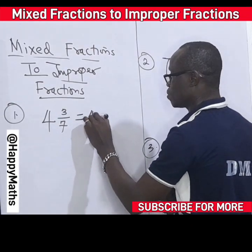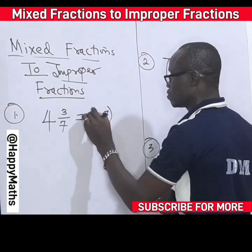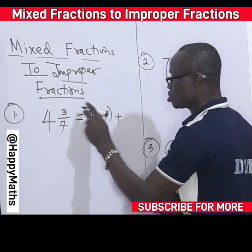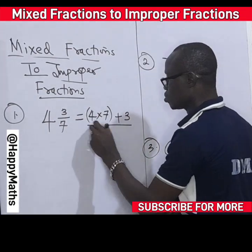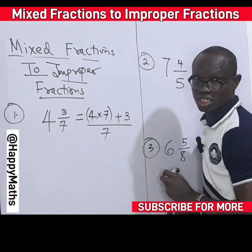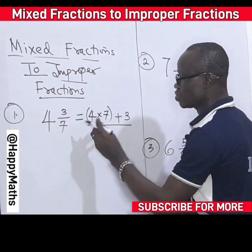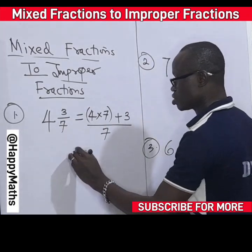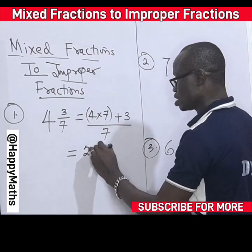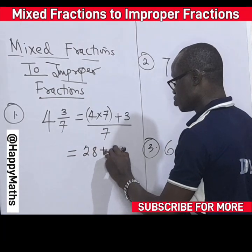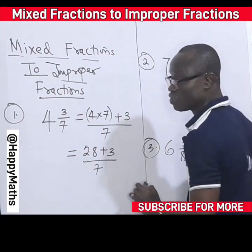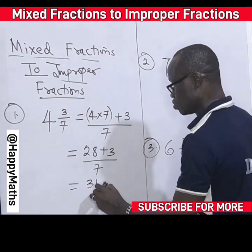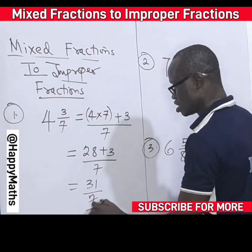Now let's convert this. This is 4 times 7 — the whole number times the denominator, plus the numerator, over the original denominator. 4 times 7 plus the numerator over the denominator. So this gives us 4 times 7 is 28, plus 3 over 7. 28 plus 3 gives us 31 over 7. This is the answer.